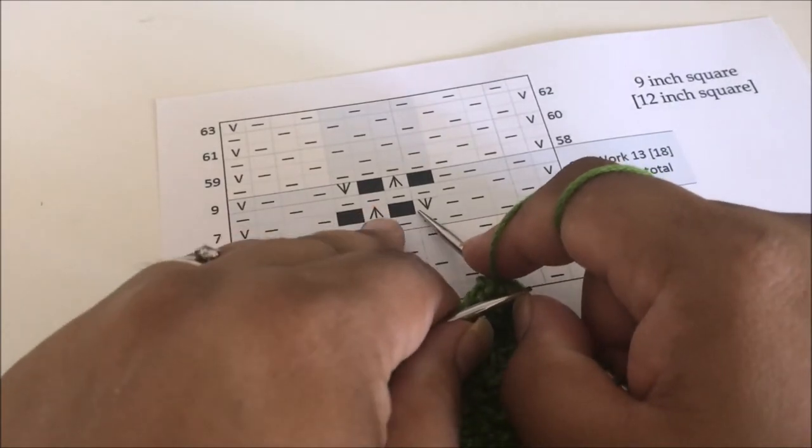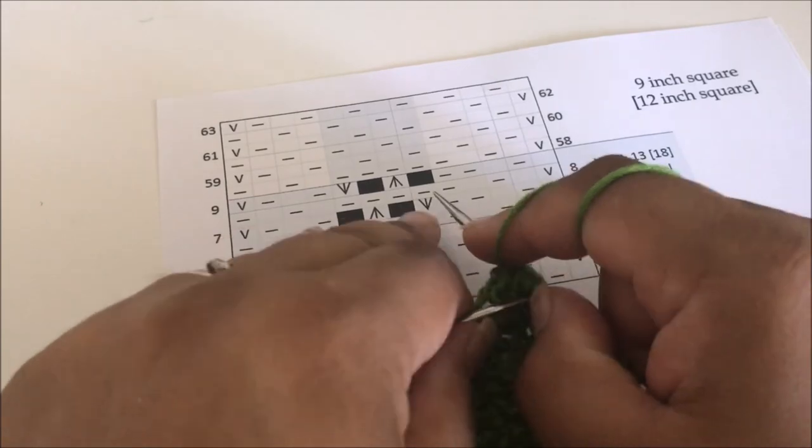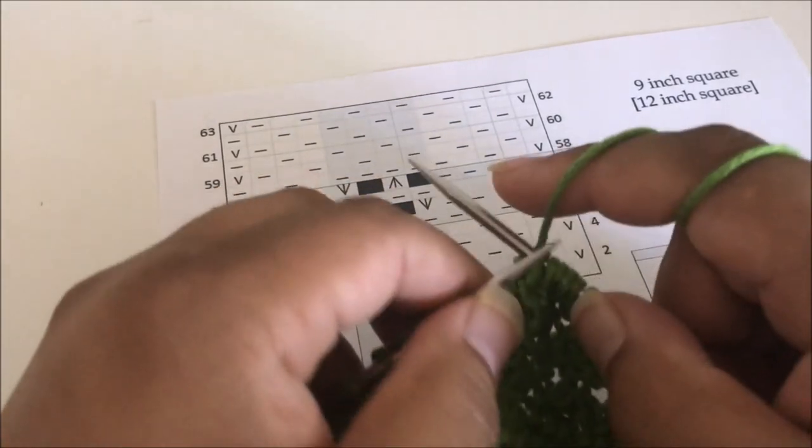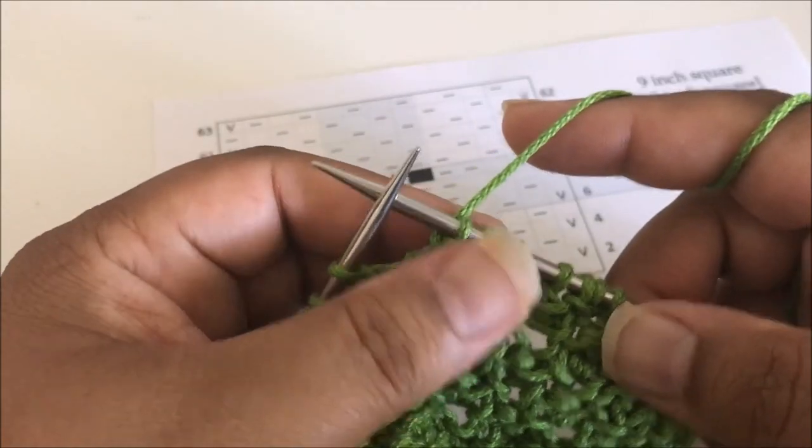On the right side rows we're purling, and on the wrong side rows we're doing alternating between purl three together, and knit, purl, knit. So I hope you enjoy the square, and I hope to see you next time for another fun square.